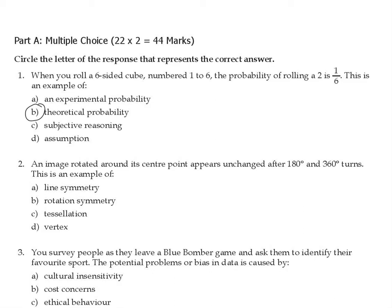Question 2: An image rotated around its center point appears unchanged after 180 degrees and 360 degrees. This is an example of rotational symmetry — correct answer is B. It's not line of symmetry, not tessellation, and not a vertex. We rotate the object around a certain point and after 180 degrees we get the same alignment, and after 360 degrees we return to the same position.